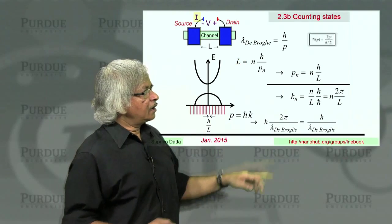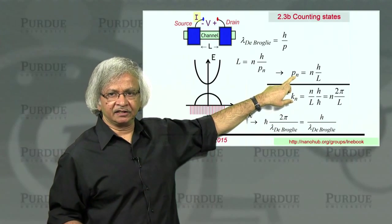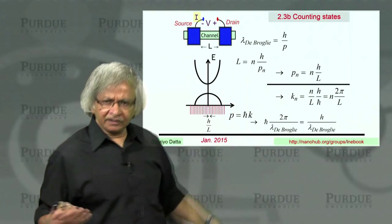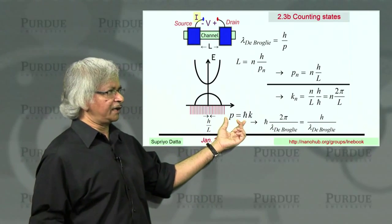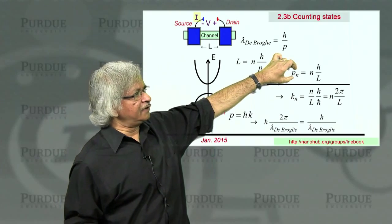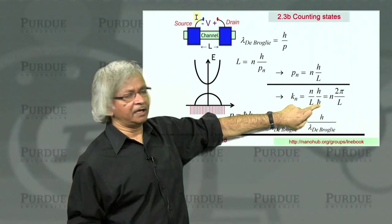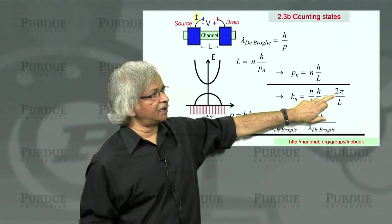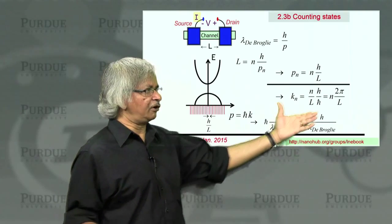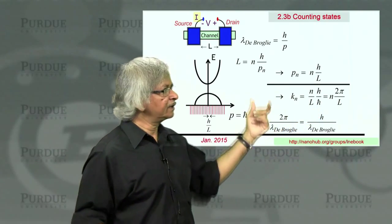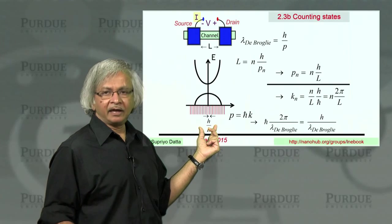Now, one point I wanted to mention is that we found this quantization condition in terms of the momentum. Often in the literature or in books, you'll see it in terms of the k. And these are just equivalent things because p is ℏk. And what you can convince yourself is, if p is an integer times h over L, then k would be that divided by ℏ. And since h divided by ℏ is 2π, it says that the allowed values of k will be integer times 2π over L. That's a formula you often see in books and in the literature.